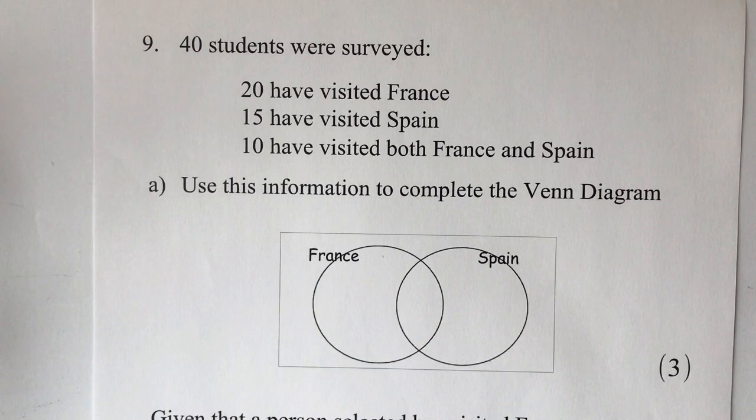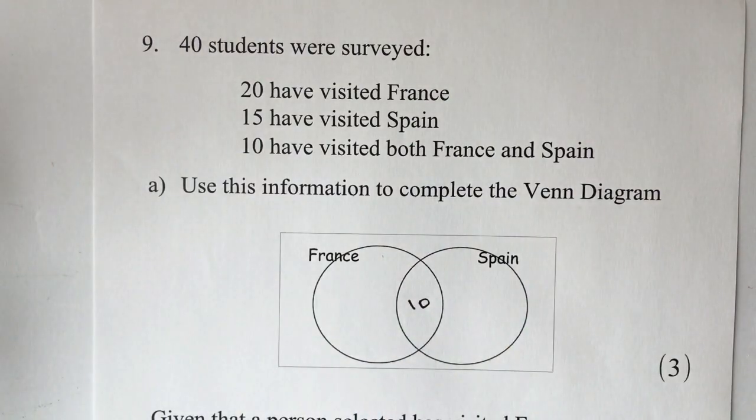So it says 40 students were surveyed: 20 visited France, 15 visited Spain, and 10 visited both France and Spain. Well, that's fairly straightforward, so we can say that 10 have visited both France and Spain, so we can take that bit of information.